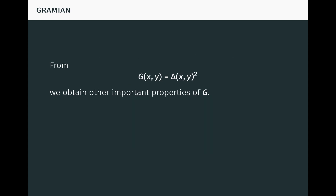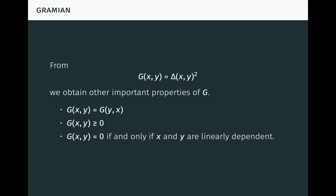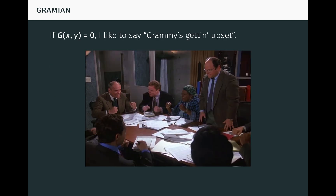From the fundamental equation g of x, y equals delta of x, y squared, we obtain other important properties of g, including: g of x, y equals g of y, x; g of x, y is greater than or equal to zero; and g of x, y equals zero if and only if x and y are linearly dependent. As a Seinfeld fan, when g of x, y is zero, I like to say 'Grammy's getting upset,' but that's very non-standard terminology.